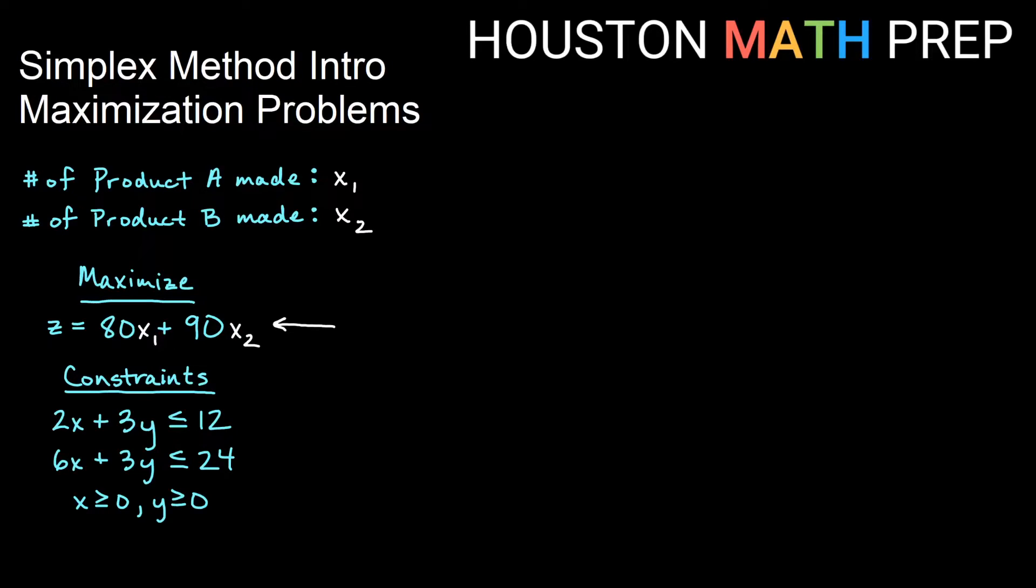So in my maximization function then I also need to change it to be 80x1 plus 90x2 instead of 80x plus 90y. And then I'll need to change it in the constraints as well. 2x1 plus 3x2 less than equal 12. 6x1 plus 3x2 less than equal 24.